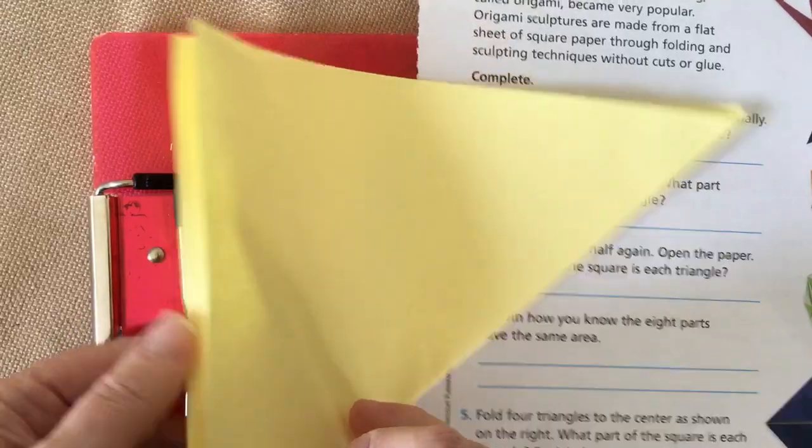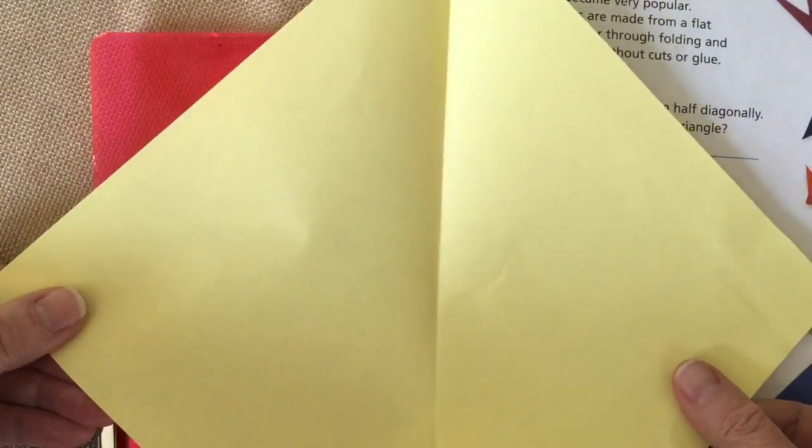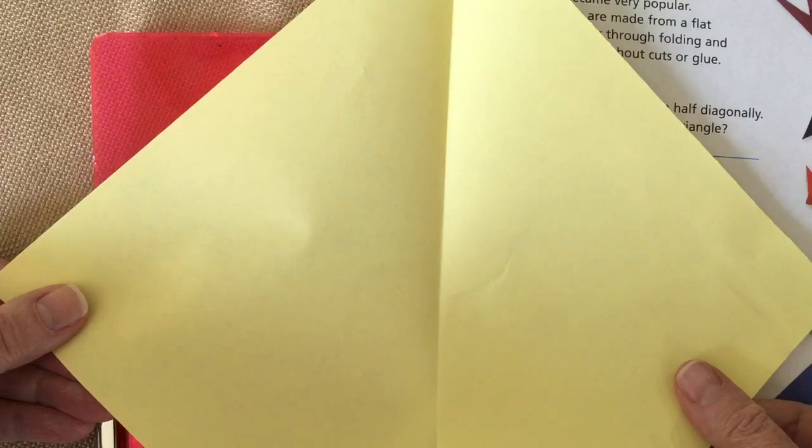It's going to look like two triangles once you've folded it. So once you've folded it and open it up, it's going to look like two triangles like that.